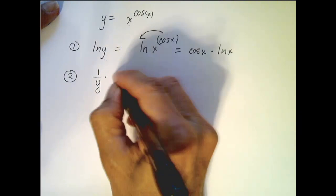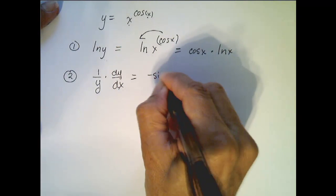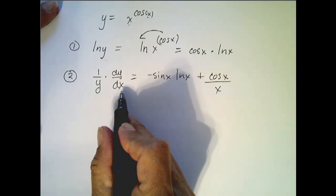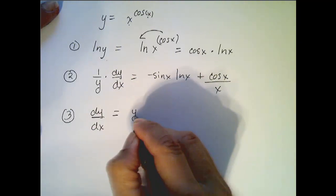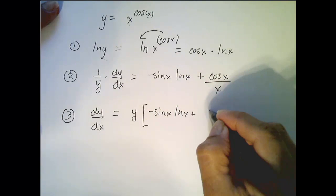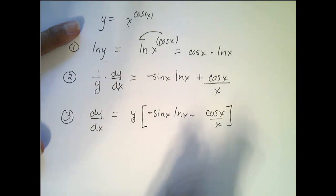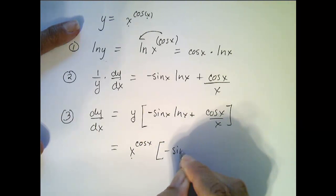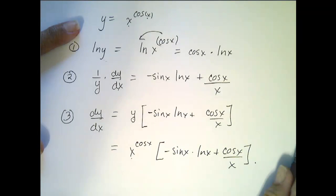Step 2: take the derivative with respect to x of both sides implicitly on the left, giving 1 over y times dy/dx. On the right, applying the product rule: minus sine x times ln of x plus cosine of x over x. Step 3: solve for dy/dx by multiplying both sides by y. Substituting y equals x to the cosine of x, the final answer is x to the cosine of x times (−sin x · ln x + cos x / x). Now go practice!